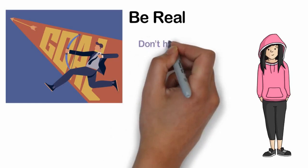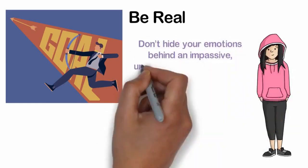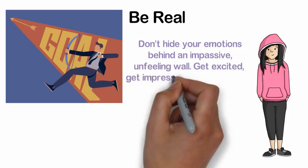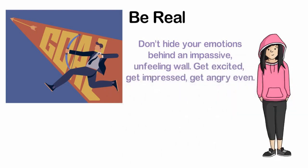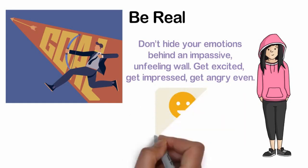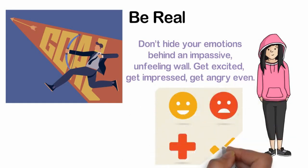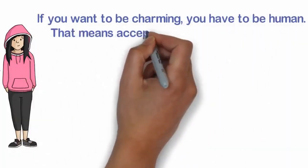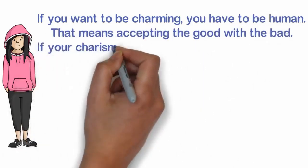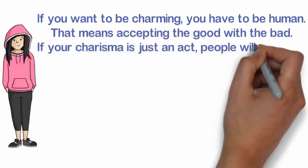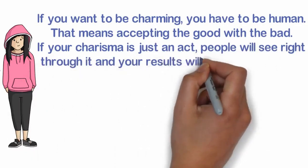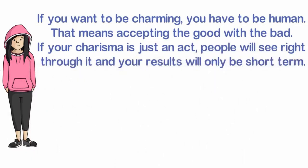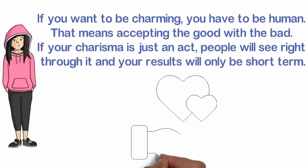So let your guard down. Don't hide your emotions behind an impassive, unfeeling wall. Get excited, get impressed, get angry even. Make mistakes, as many as you like, but own up to them as well. Take responsibility for your actions. Always be your authentic self. Own your flaws just as you would your strengths. If you want to be charming, you have to be human. That means accepting the good with the bad. If your charisma is just an act, people will see right through it and your results will only be short term. So allow yourself to be vulnerable and real with people, because that is who people will fall in love with.